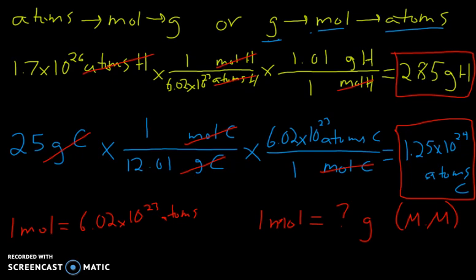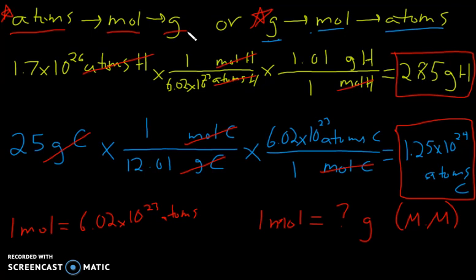When doing these multi-step conversions, I recommend setting up a roadmap at the top — either atoms-to-grams or grams-to-atoms, depending on where you need to go. If going from atoms to grams, remind yourself to go from atoms to moles first, then moles to grams, so you know what goes on top and bottom and in what order. If going from grams to atoms, make sure you do grams to moles first, then moles to atoms. And that's all for this video.